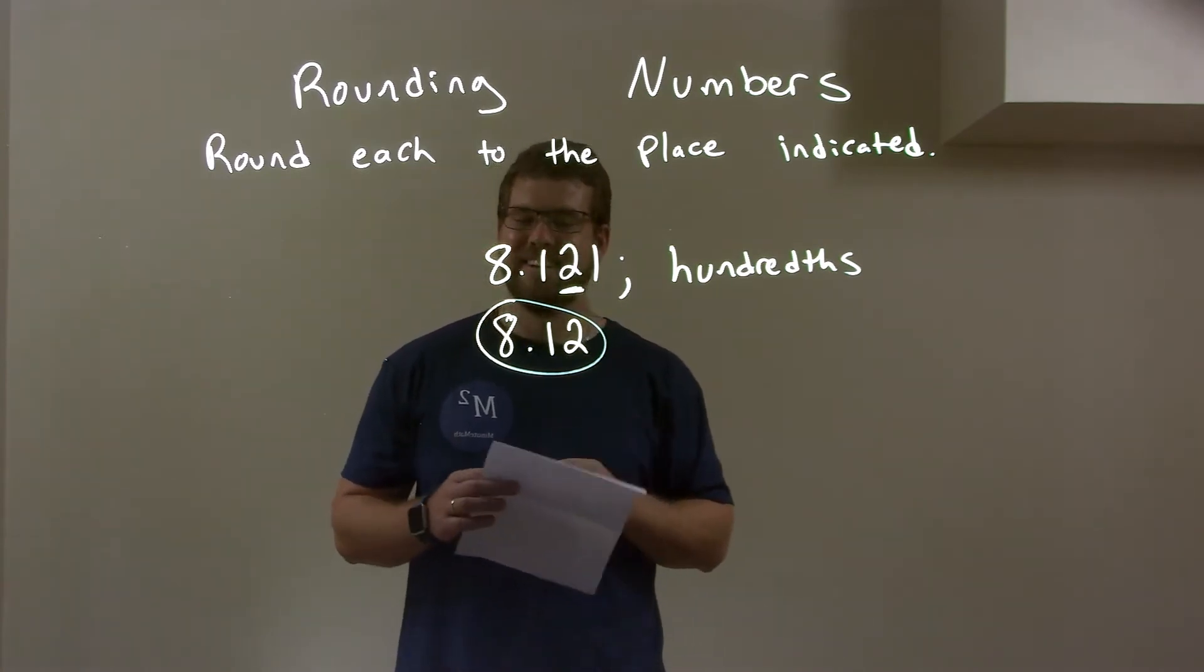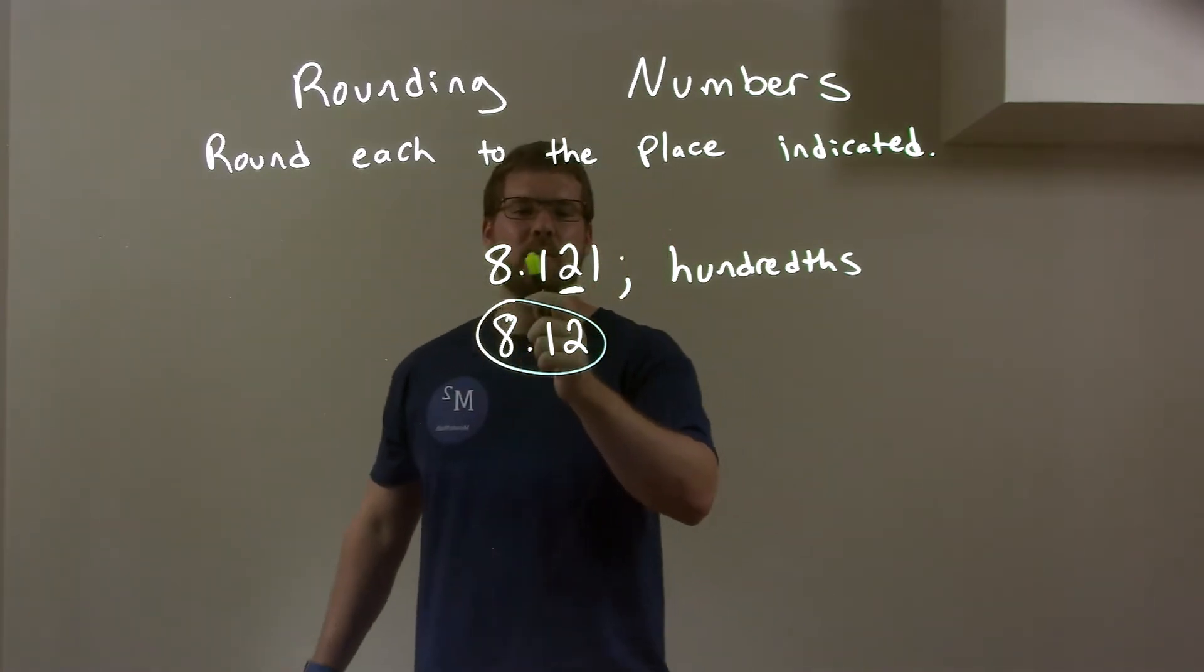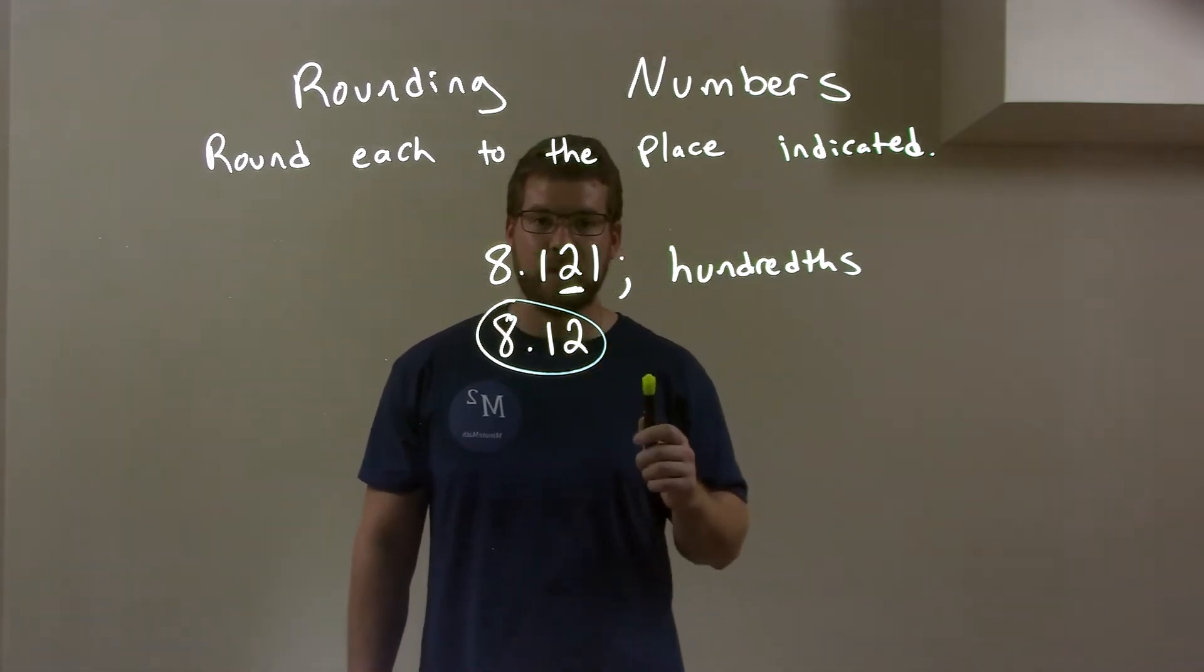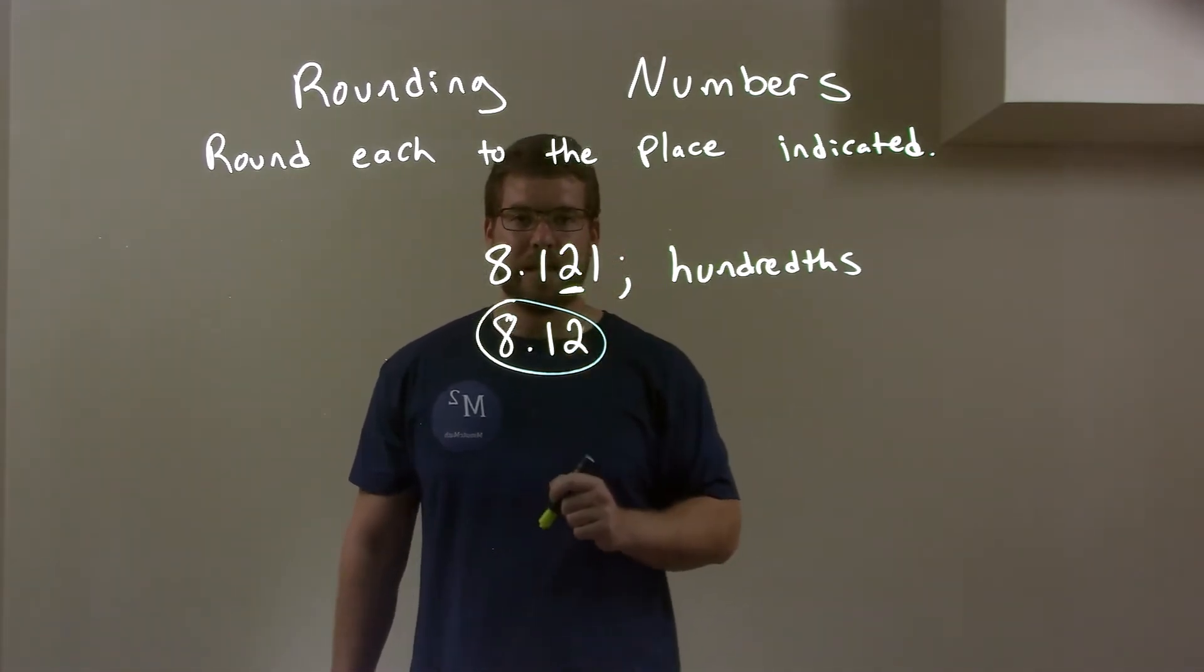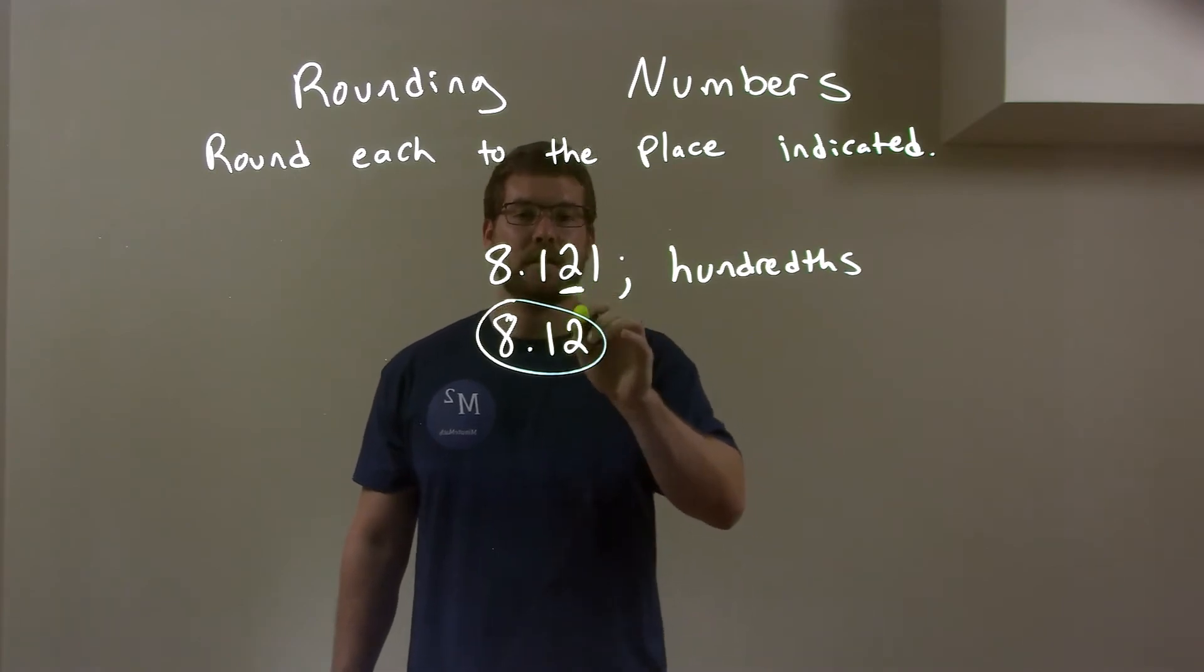So, quick recap. We have 8.121, and we're rounding to the hundredths, okay? The hundredths place is 2, like I indicated, and then to the right of that we see the 1.